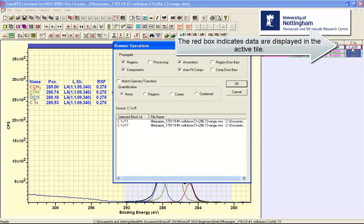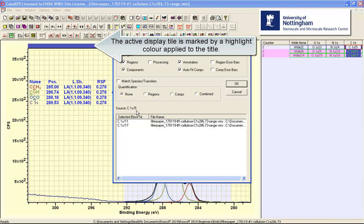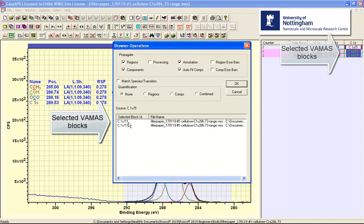We have displayed in the active tile indicated by the red box the spectrum that contained the processing. We can see it here, it's reported here as being the source of this propagation action, and then we have two selected VAMAS blocks, slash 11 and 17, and these correspond to these selected VAMAS blocks over here.